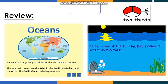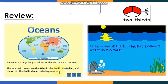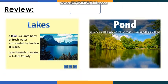An ocean is a large body of salt water that surrounds a continent. The blue areas on the map represent the oceans. The four main oceans are the Atlantic, the Pacific, the Indian, and the Arctic. The Pacific Ocean is the largest ocean.